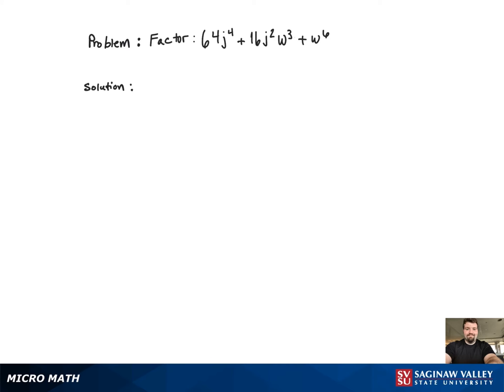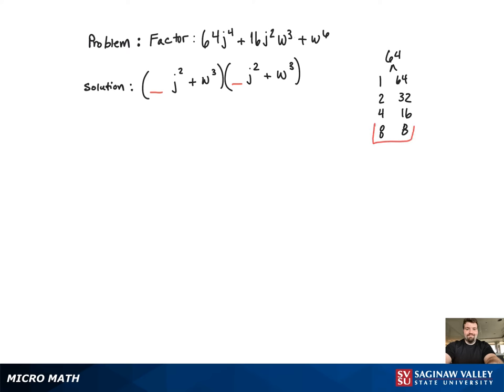Since the coefficient of the w to the 6th term is just 1, we can put w cubed at the end of both binomials. Now we just need to find what factors of 64 we want to use in the binomial. This is a list of all of the factors, and it is clear that 8 and 8 are the only two that will sum to 16.